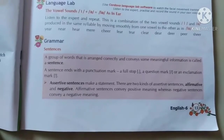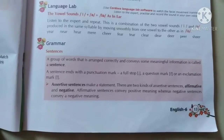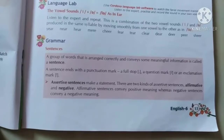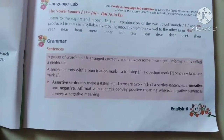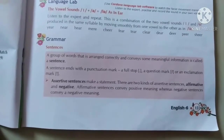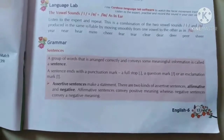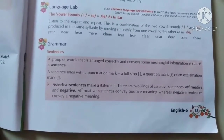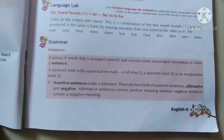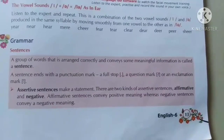Assertive sentence makes a statement. Koi bhi chiz ko batane ke liye, humloh hamesha assertive sentence use karta hai. Jo universal truth ho, usme bhi assertive sentences lagte hain. Jaise for example, 'The sun rises in the east.' Toh sab jagah ye true hai. Aisi universal truth wale sentences ko assertive sentence bola jata hai.